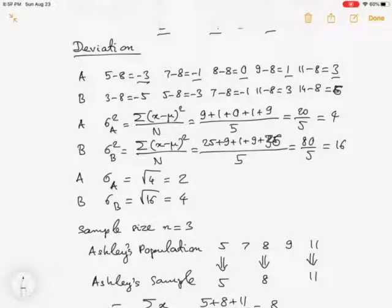For Brandon, the deviations are 3 minus 8 is negative 5, 5 minus 8 is negative 3, 7 minus 8 is negative 1, 11 minus 8 is 3, and 14 minus 8 is 6. Now we calculate the population variances for Ashley and Brandon. Remember that to calculate the population variance, we use the formula that is the sum of the square of deviation divided by the total population.